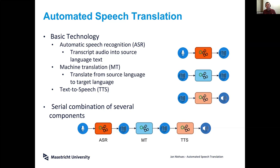Seeing these three components, you can directly get an idea of how we can do automated speech translation — we can just build a cascade of all these systems. We take the audio and transcribe it with our ASR system into source-language text.